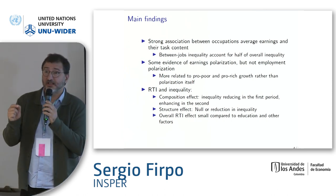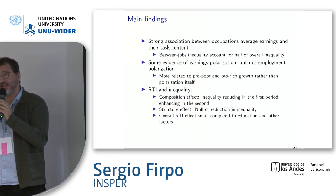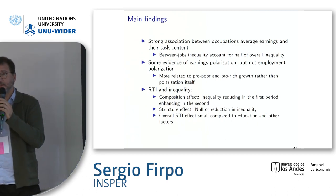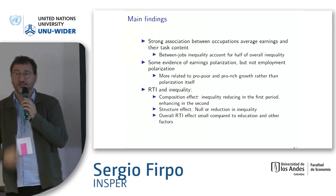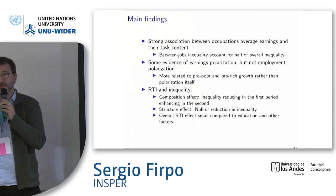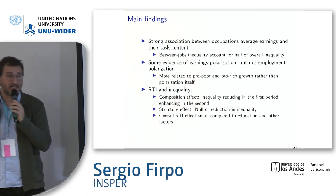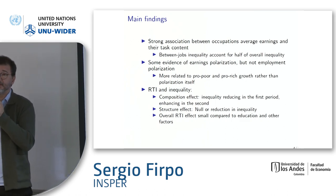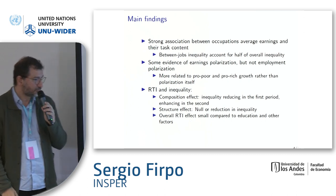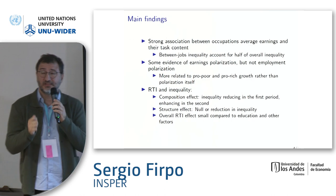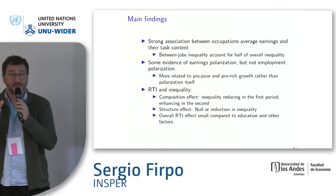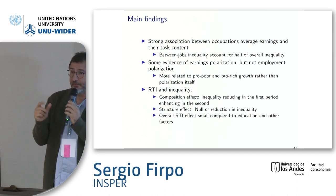What we do not find is employment structure changes in terms of the share of workers in the middle of the employment distribution decreasing — employment in middle jobs did not decrease, it actually increased slightly. What happened was that average earnings in middle jobs increased while the employment structure remained the same. There is a small composition effect coming from RTI, especially in the first period, but it is quite small compared to other factors.